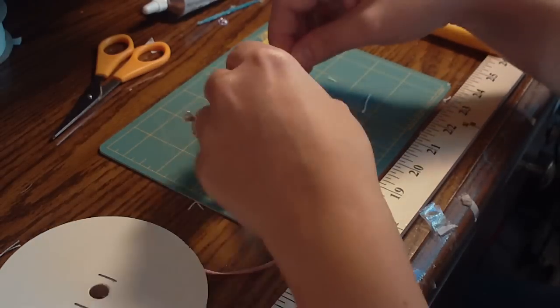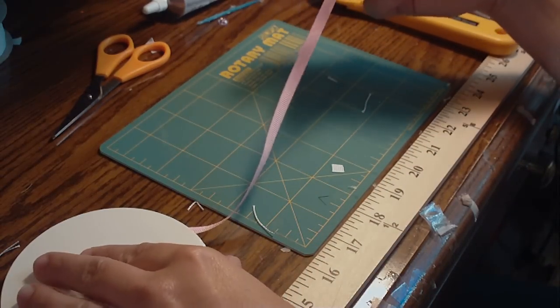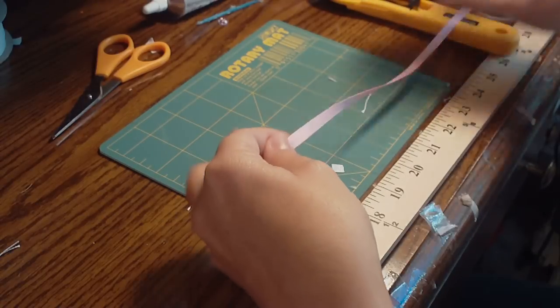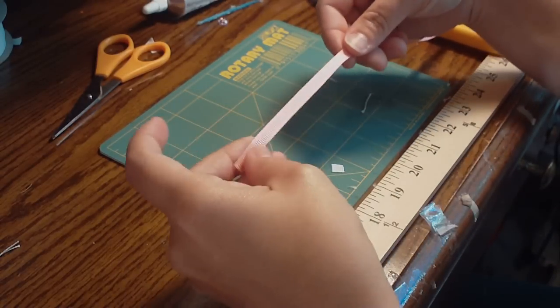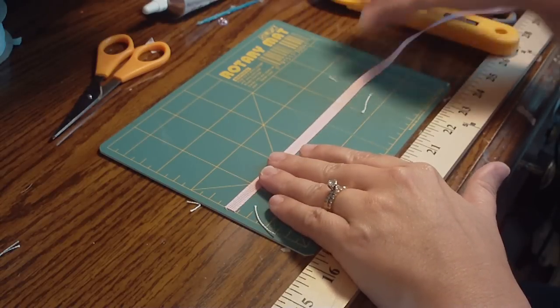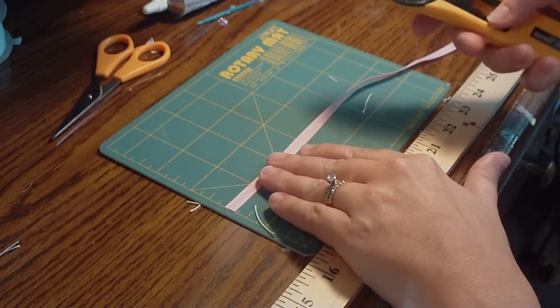I make three sizes, and this is the small. Today we're going to make a pink one, and for the small ones I use quarter inch ribbon. So we have pink quarter inch ribbon, and for the small flower you're going to need four four-inch pieces of quarter inch ribbon.